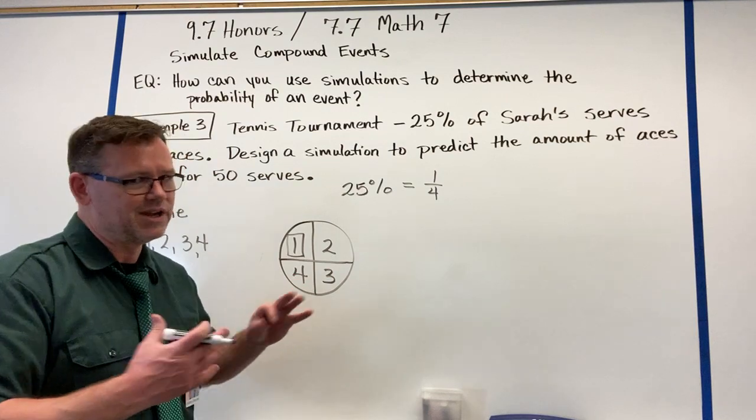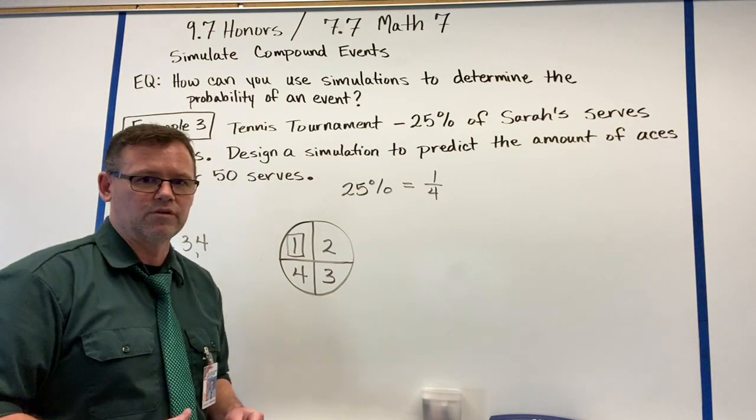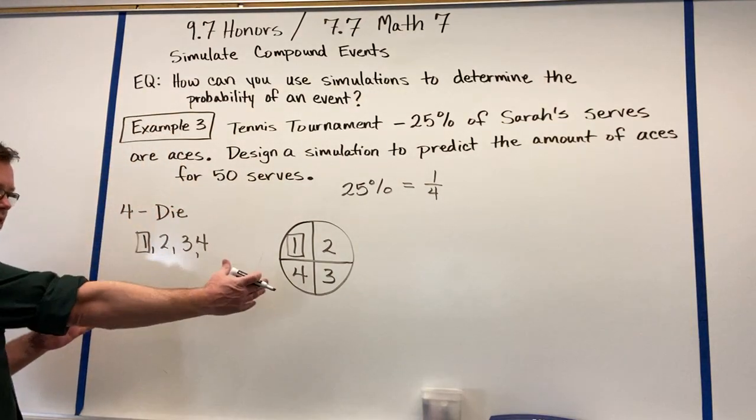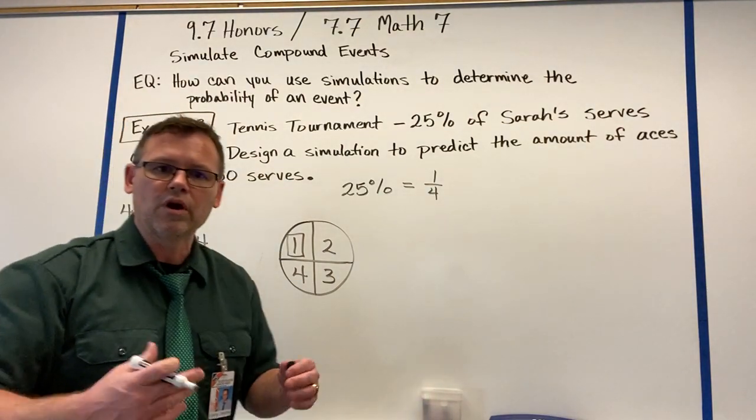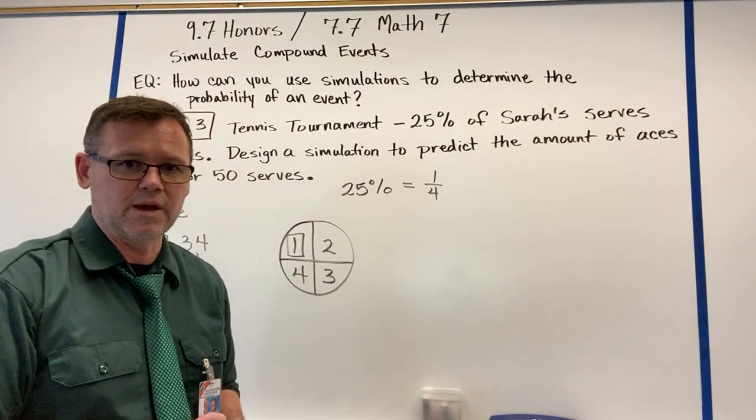If it lands on two, three, or four, she didn't serve an ace. And you would have to spin it 50 times to figure that out. And that's what I mean. Do you see a common trend here? We have to have four outcomes. And that's because it was 25% of the time.